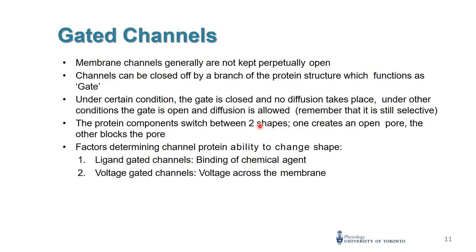The factors that determine whether a channel protein changes its shape depend on the type of channel. Channels can be opened or closed by different factors. If the factor is a chemical agent or neurotransmitter, we call these ligand-gated channels. Voltage-gated channels are opened or closed by the voltage across the membrane — a concept we'll explore in a few minutes. First, we're going to visit what happens with the ligand-gated channel.